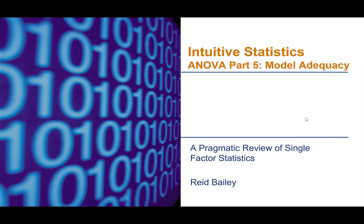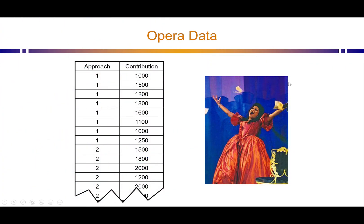My name is Reed Bailey, and this is the fifth and final part of our series on analysis of variance. This one is focused on model adequacy — that is, does the data meet the assumptions of analysis of variance?